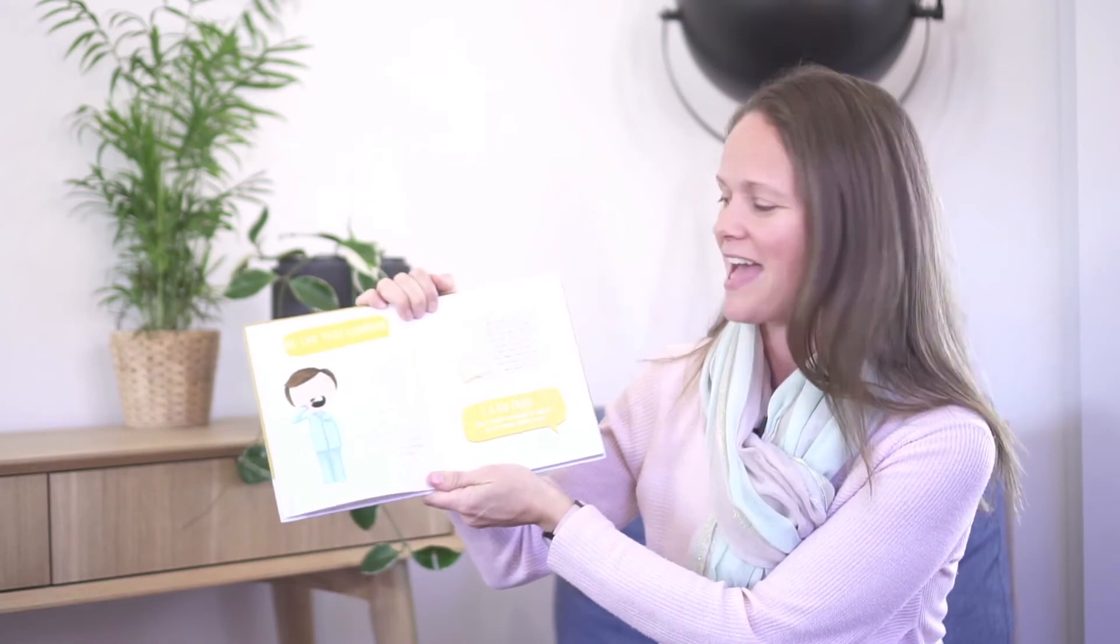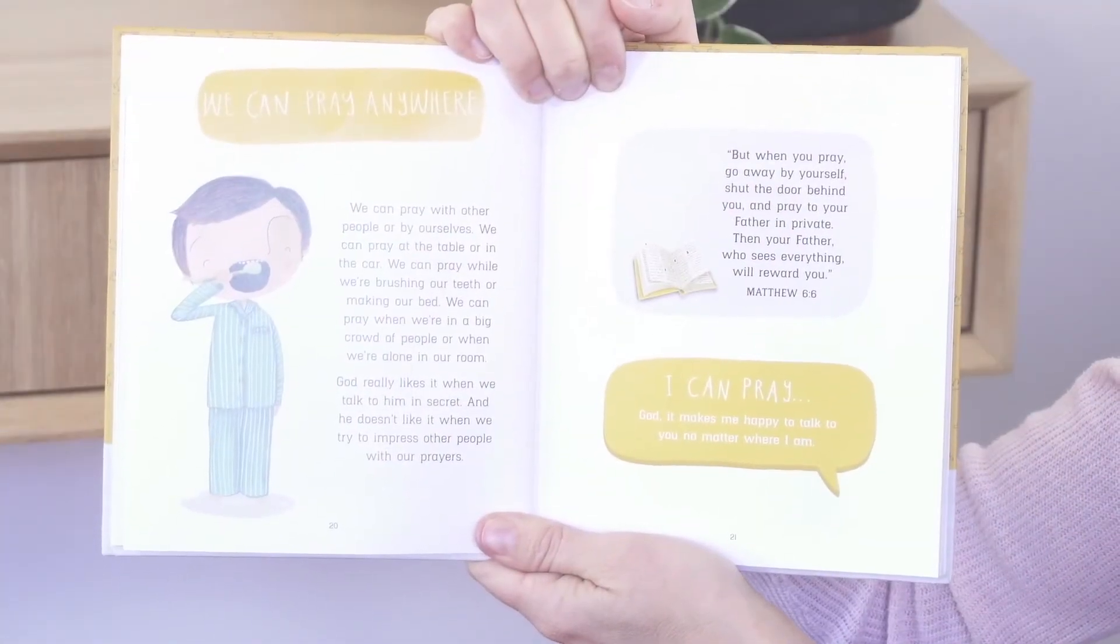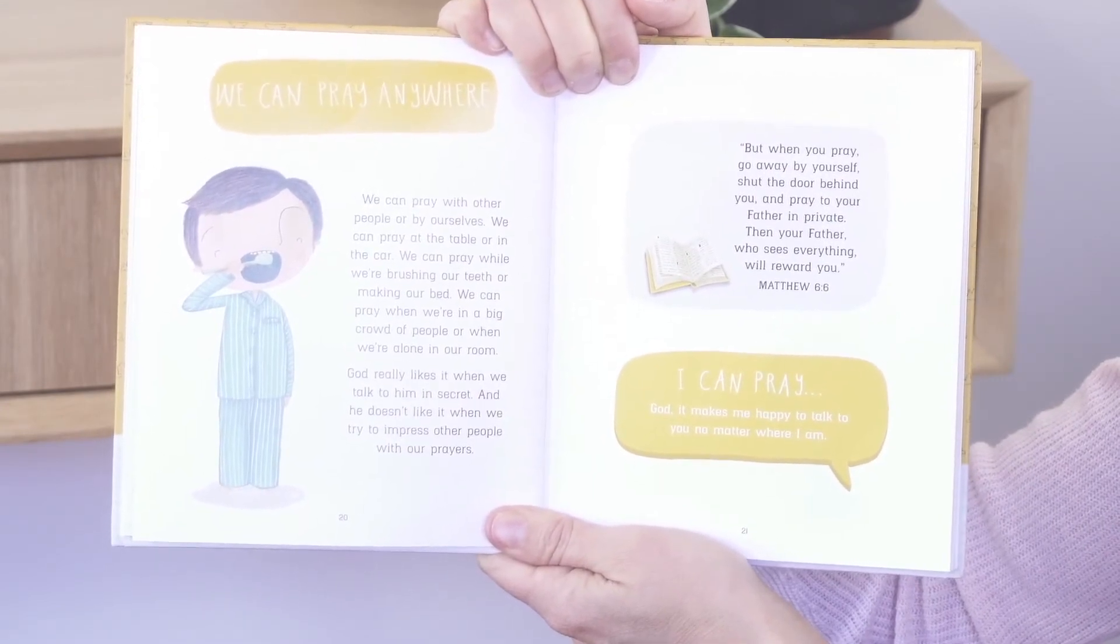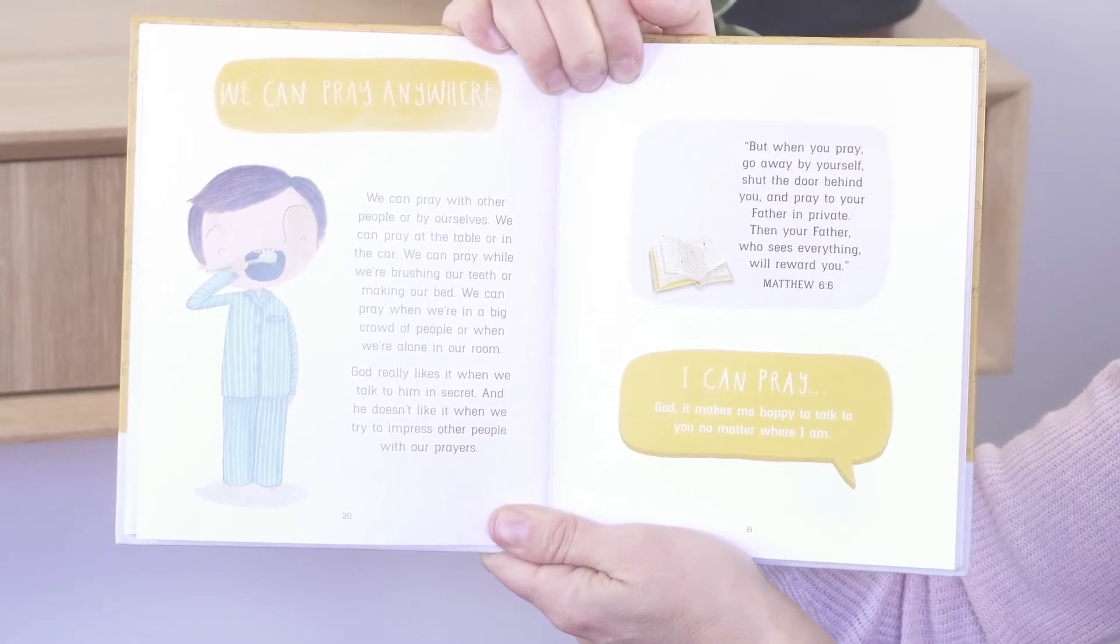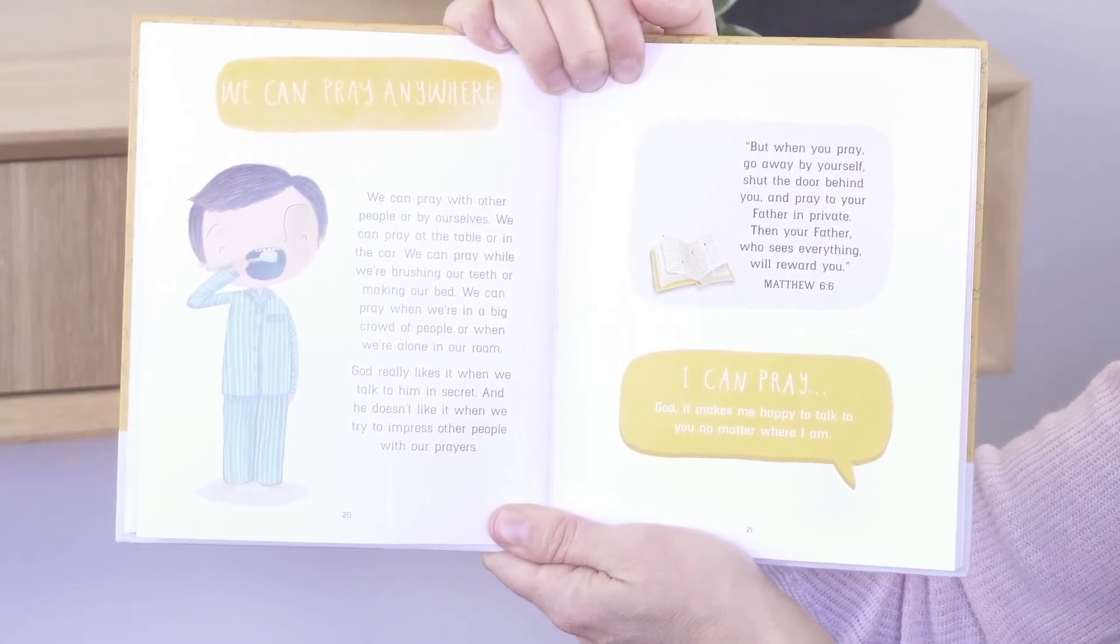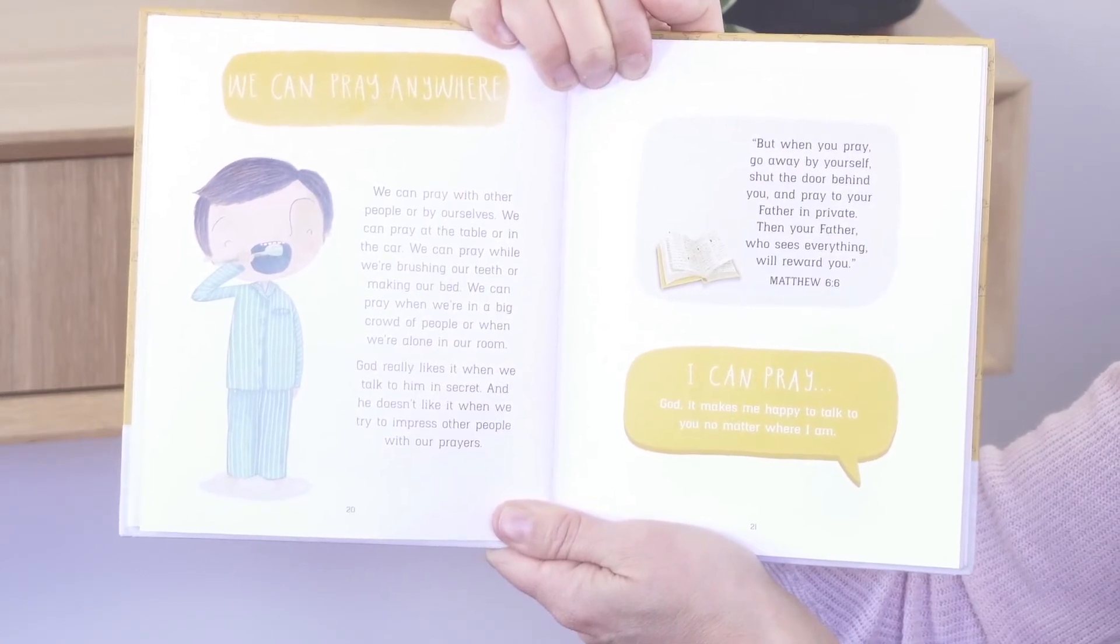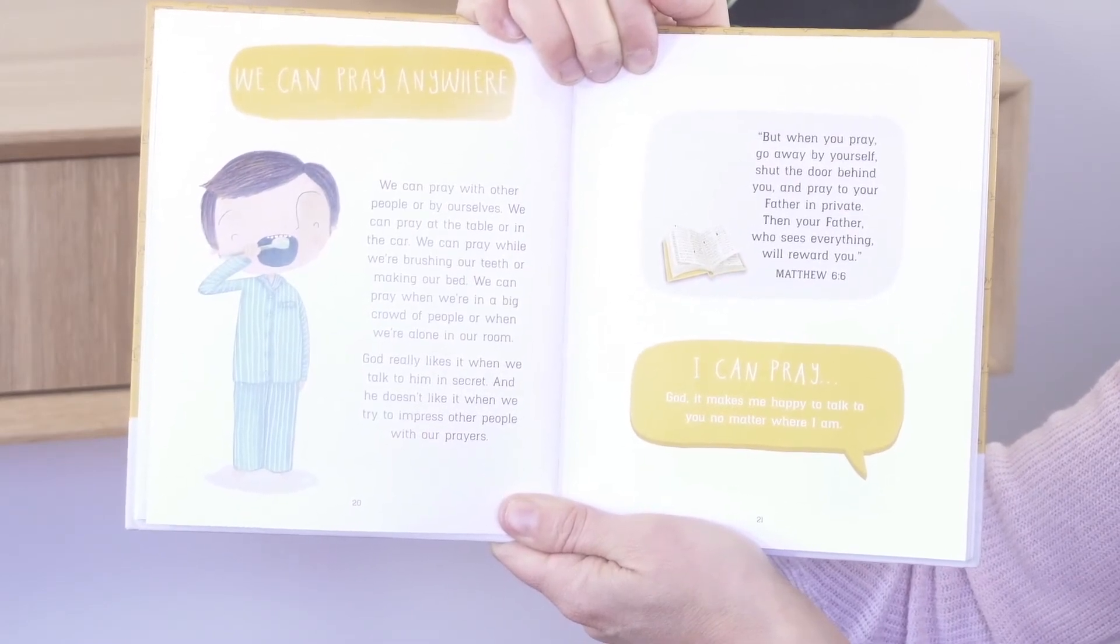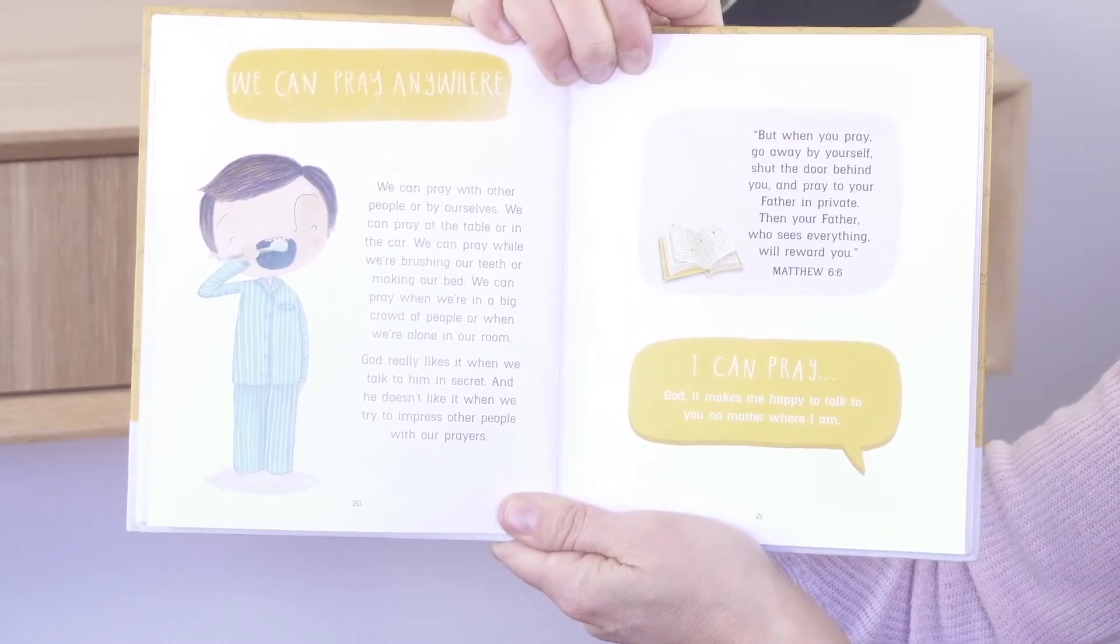We can pray anywhere. We can pray with other people or by ourselves. We can pray at the table or in the car. We can pray while we're brushing our teeth or making our bed. We can pray when we're in a big crowd of people or when we're alone in our room. God really likes it when we talk to him in secret, and he doesn't like it when we try to impress other people with our prayers.